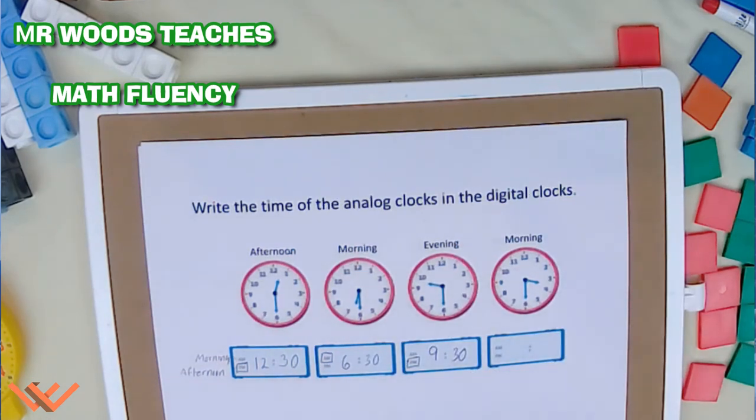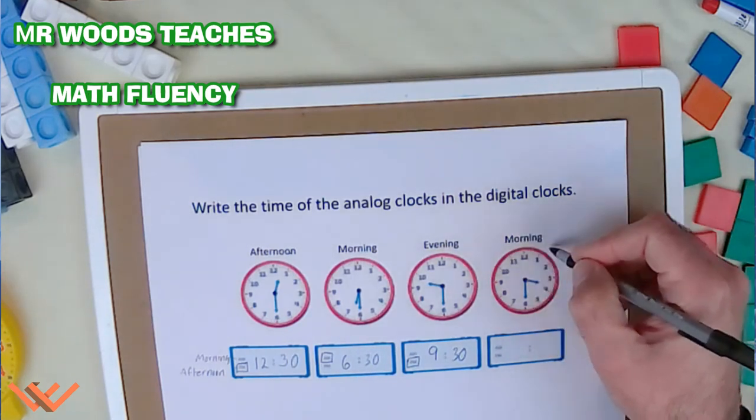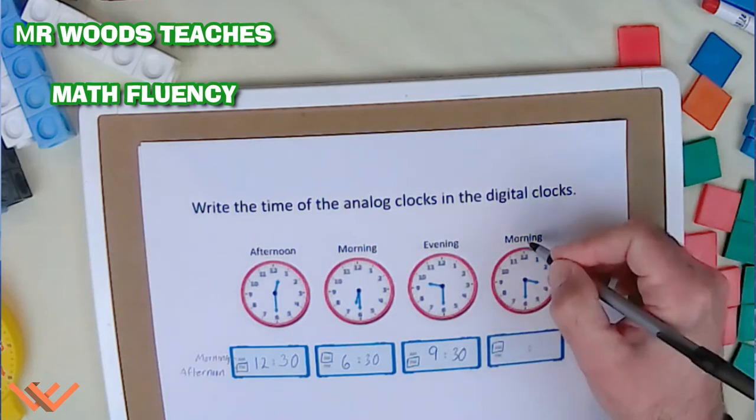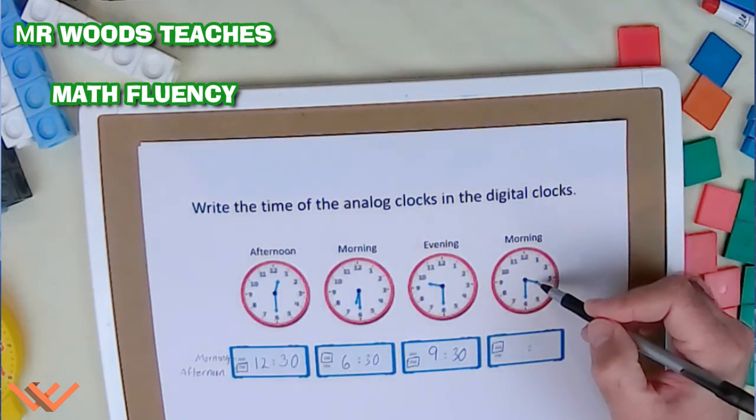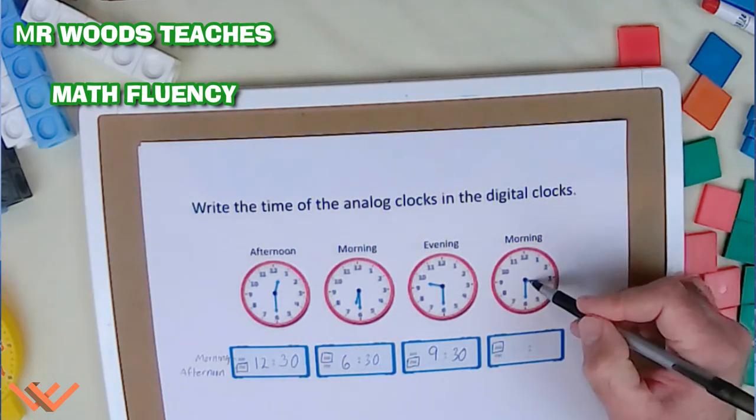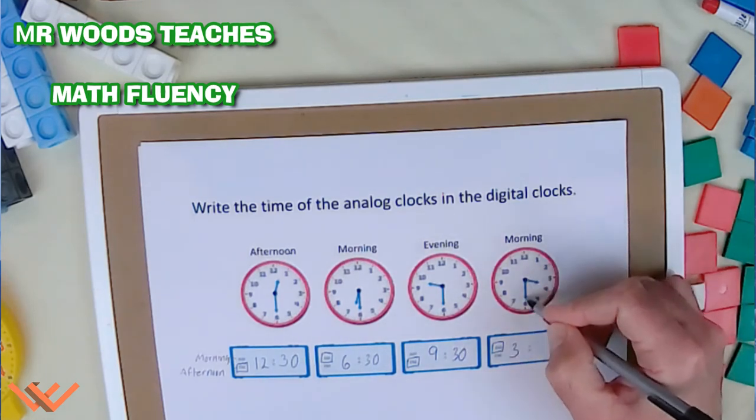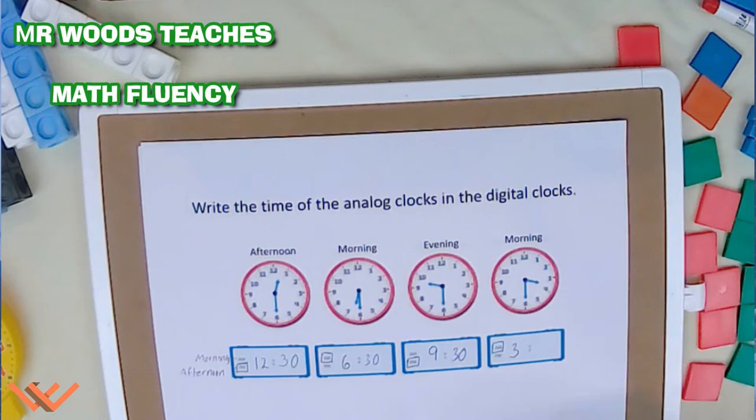Let's look at this last clock here. Again, here's my clue of what time it is. I could just say, hey, that's AM because it says morning. So I'm going to look at this. The hour hand is between the 3 and the 4. So that's definitely 3. And it's down here at 6. So that's 30.